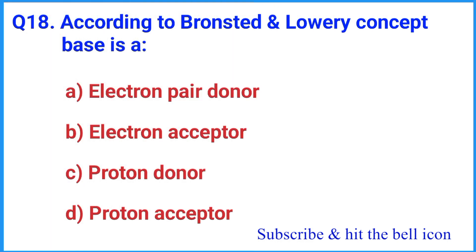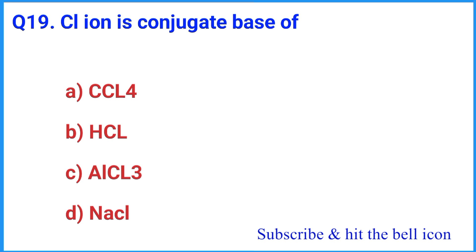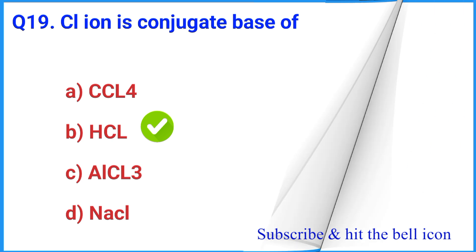Question number 18: According to Bronsted and Lowry concept, a base is — the correct answer is option A. Question number 19: The conjugate base of HCl is — the correct answer is option B: HCl.